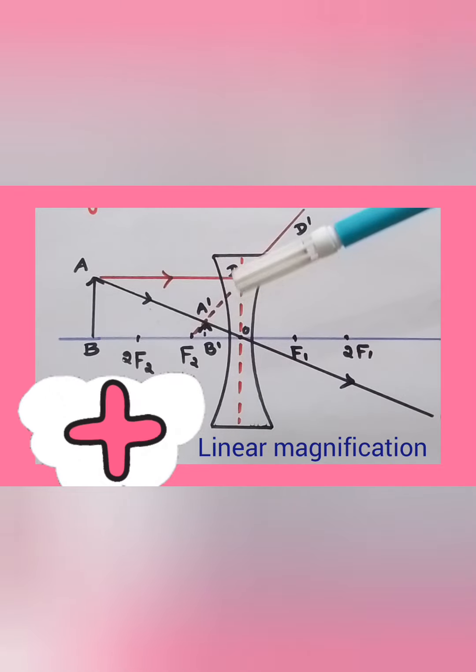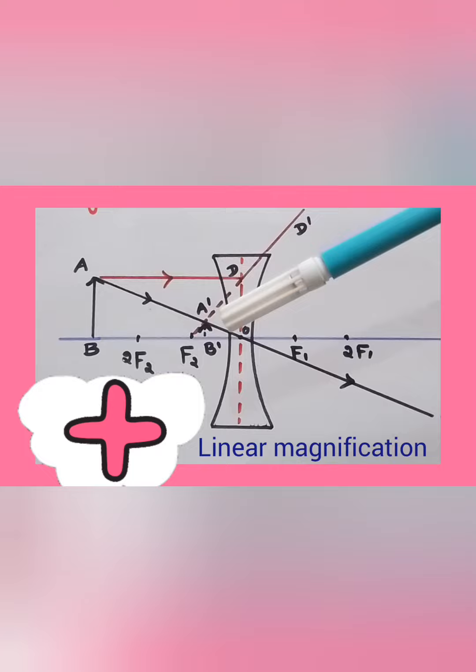We find always the image formed is upright or erect, a virtual image is formed in case of concave lens. Hence linear magnification of concave lens is always positive value.